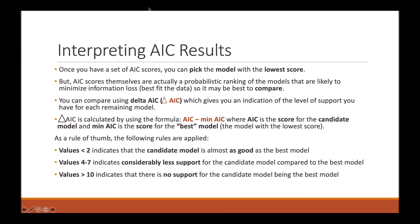Once you have your set of AIC scores, you can pick the model with the lowest score to be your best model. But you do need to remember that AIC scores themselves are actually a probabilistic ranking of the models that are likely to minimize information loss, so it may be best to compare them.